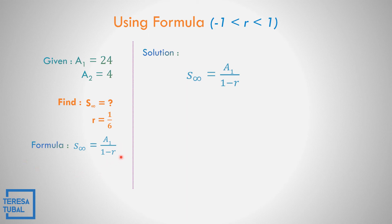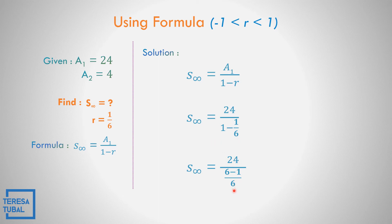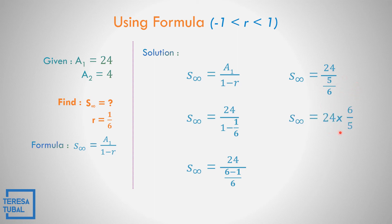The sum to infinity is equal to a sub 1 all over 1 minus r. Let us substitute: the first term is 24 all over 1 minus the common ratio 1 over 6. Solve the denominator — the LCD of 6 and 1 is 6. So 6 divided by 1 is 6 times 1 equals 6; and 6 divided by 6 is 1 times negative 1, equals negative 1. Subtract: 6 minus 1 equals 5, copy 6. So 24 all over 5 over 6 — get the reciprocal: copy 24 times 6 over 5. Multiply: 24 times 6 equals 144, copy 5. The sum to infinity is equal to 144 over 5.